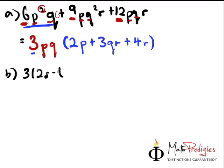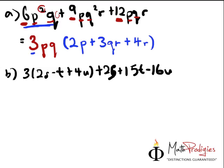3, 2s minus t plus 4u. And then we have next part. Plus 2s plus 15t minus 16u. So you will get from here. What must you do? First off, you've got to expand this one. So 3 times 2s gives you 6s. 3 times minus t gives you minus 3t. Plus 4u times 3 gives you 12u. Then of course you plus 2s. You plus 15t. And then you minus 16u.